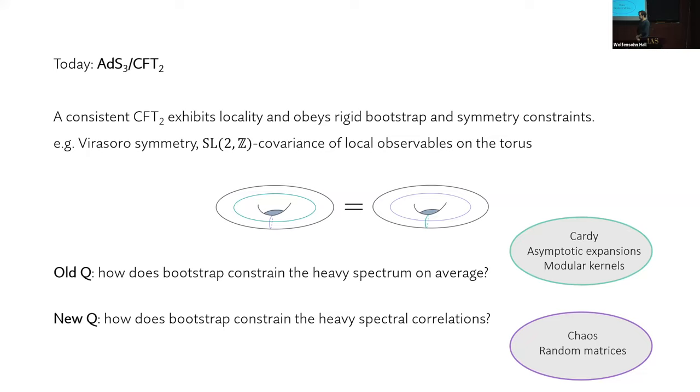But a new question, relatively speaking, that the bootstrap really has yet to answer, is how does the bootstrap constrain the heavy spectral correlations, the fine structure of the asymptotic spectrum? And this is where chaos and random matrices live.